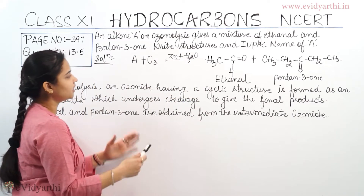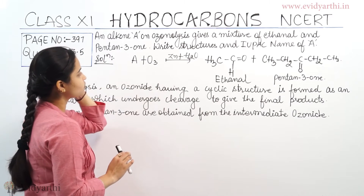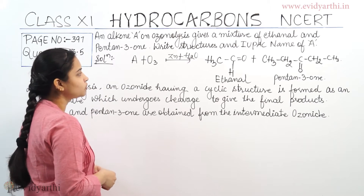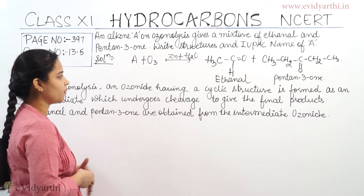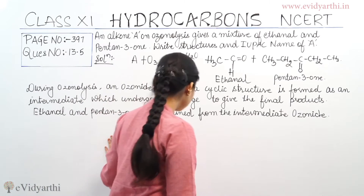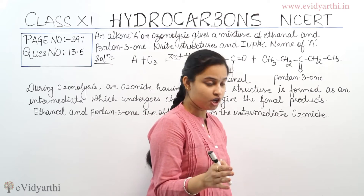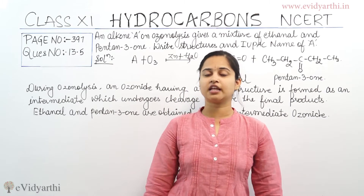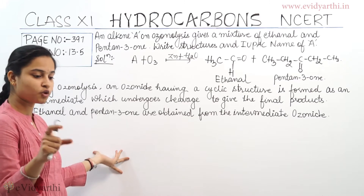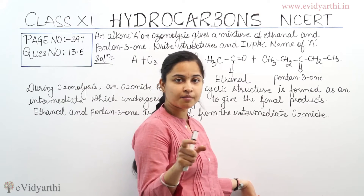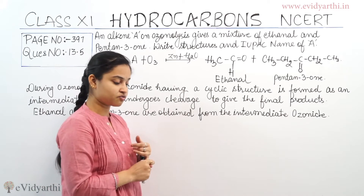So what we are given is alkene A, which we need to find out. When this alkene A reacts with ozone in the presence of zinc and water, we get two products: ethanal and pentan-3-one. During ozonolysis, an ozonide having a cyclic structure is formed as an intermediate.